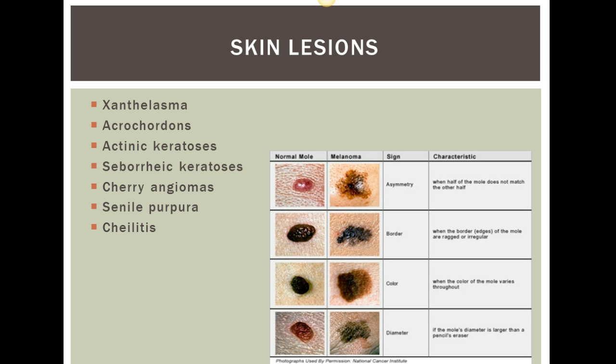Actinic keratosis are normal aging growths that are precancerous, and they can look like colored plaques. Seborrheic keratosis are benign wart-like lesions. Cherry angiomas are vascular lesions — they're tiny red spots. Senile purpura are also vascular lesions; they're fragile blood vessels, red to purple spots, and essentially are ruptured capillaries.